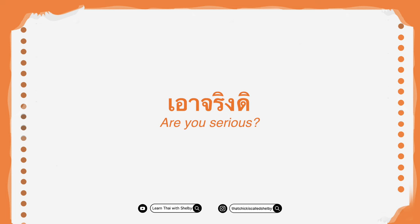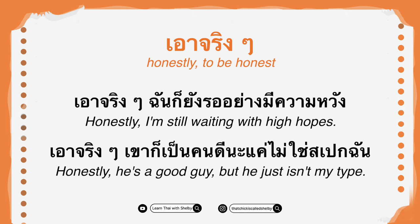The next phrase is เอาจริงดี — meaning 'are you serious?' Instead of just saying จริงหรอ, a real Thai person would say เอาจริงดี. Next is เอาจริงจริง, which means 'to be honest' or 'honestly.' Example: เอาจริงจริง ฉันก็ยังรออยู่อย่างมีความหวัง — honestly, I'm still waiting with high hopes. And: เอาจริงจริง เขาก็เป็นคนดีนะ แค่ไม่ใช่สเปกฉัน — honestly, he's a good guy but he just isn't my type. สเปก means 'type' as in your type.